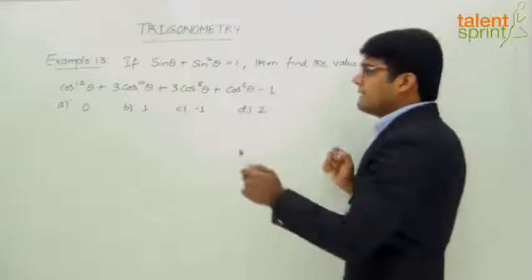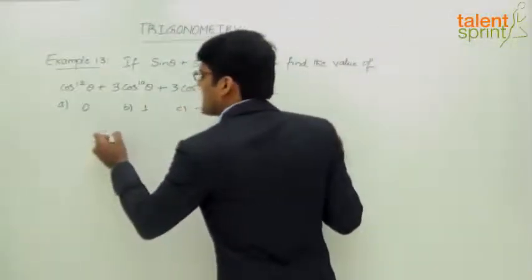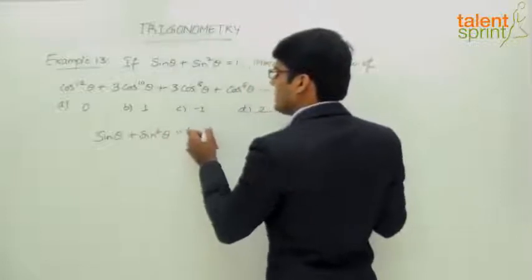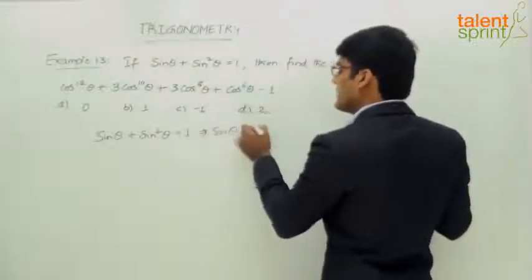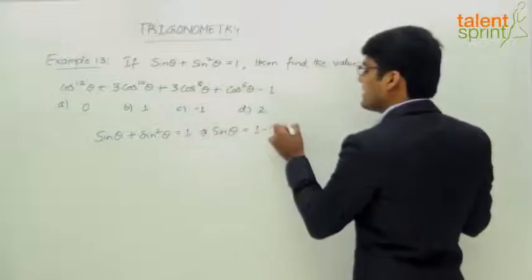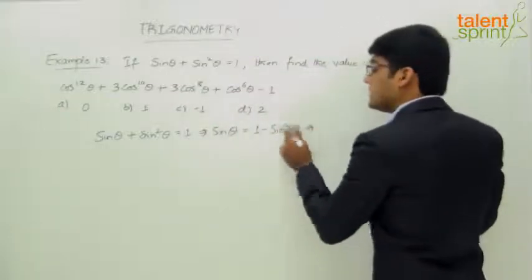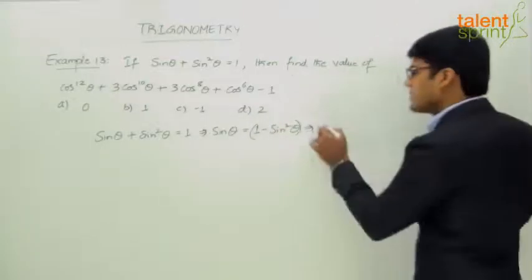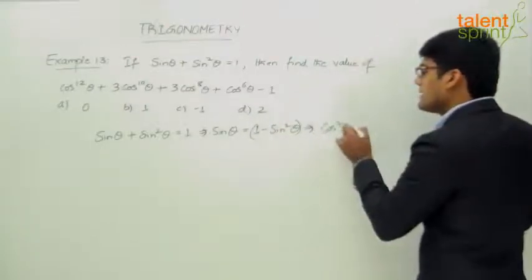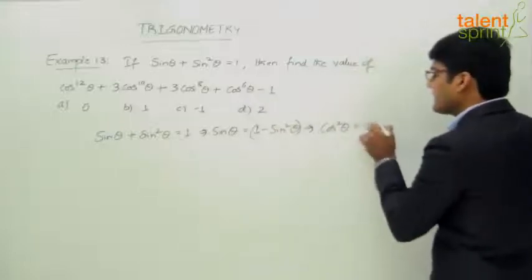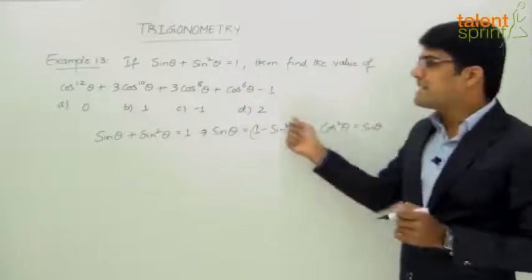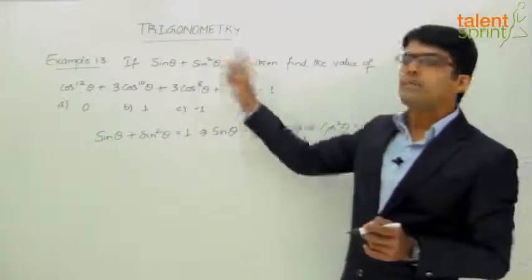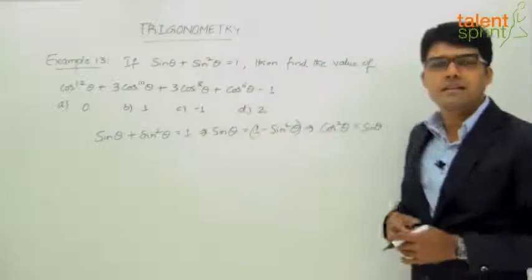But instead of doing all that, let's look at the equation: sin θ + sin²θ = 1. From this we can say that sin θ = 1 - sin²θ. And 1 - sin²θ is nothing but cos²θ. So cos²θ = sin θ. We know that cos²θ equals sin θ from the given equation sin θ + sin²θ = 1.